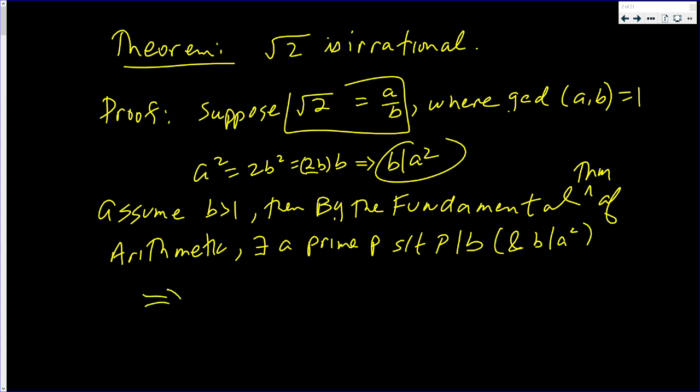Well, those two imply that p divides a squared. If p divides one number and that number divides the third number, then the first divides the third with no problem.